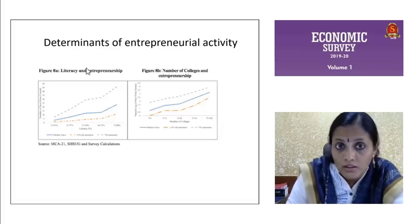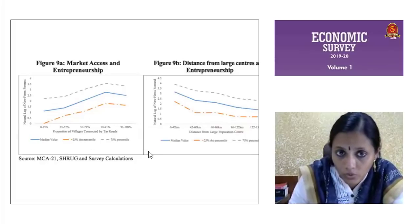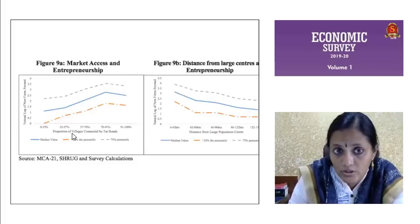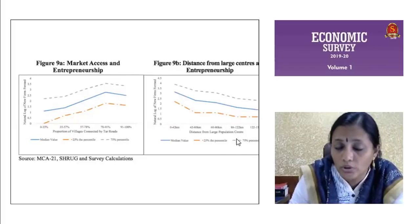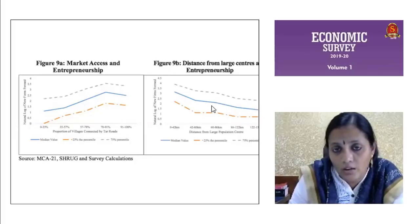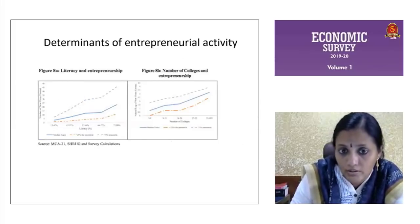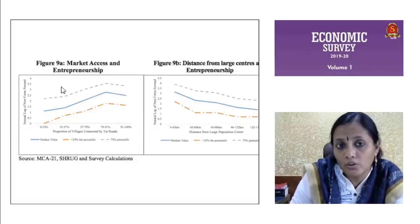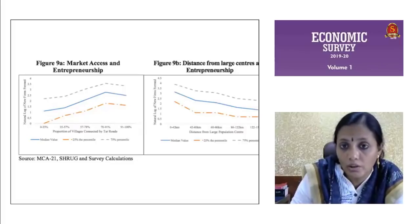The other two major determinants are market access and entrepreneurship. If there is good connectivity by tar roads — around 75% of roads being tar roads — the number of firms getting registered or entrepreneurship is actually increasing. Also, distance from large centers matters: if you are closer to an urban center — within 42 kilometers — there is a good number of firms getting registered. As the distance increases away from urban centers, the line actually becomes lesser. So you can summarize the four determinants as: level of literacy, number of colleges, market access (road connectivity), and distance from large urban centers.